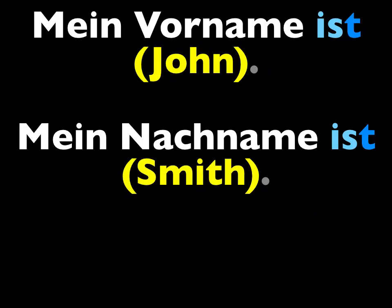If you want to be more precise, you could say, my first name is — repeat this: Mein Vorname ist John. Or you could say, my last name is such and such. Repeat this: Mein Nachname ist Smith.